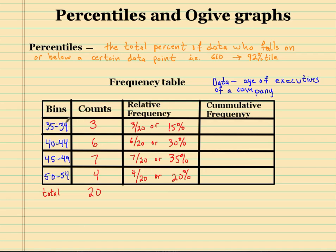So from 35 to 39, we had 3 people who fall in that age group. From the 40 to 44 age range, we had 6 people, etc. So these are just counts of how many people fall in this range of age.